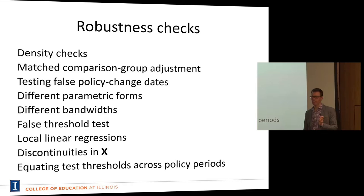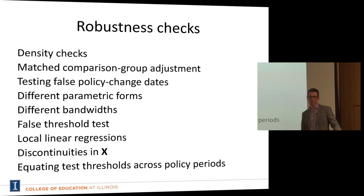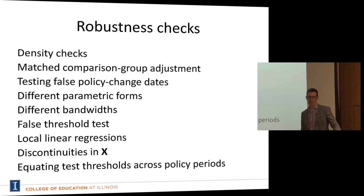One other thing related to the expectations story: California didn't shift things at the margin — they really made it much more difficult for kids to attain the CELT criterion. We need to think about whether this radically changed how teachers instruct English learners, the perceptions they have of the kids, or how the peer group is structured. Unfortunately, we don't have data linking individual students to classrooms, so we can't look at peer effects for this — but that's another possible mechanism.